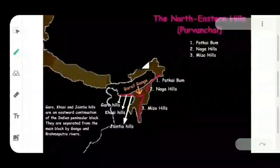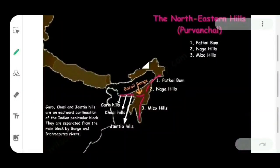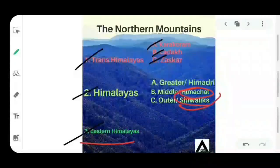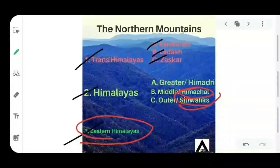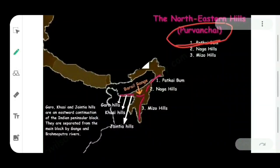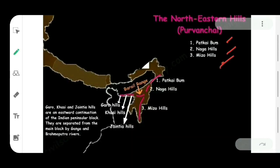Moving on to the next part: the Eastern Himalayas, also known as Purwanchal. The Eastern Himalayas are divided into three parts. The first part is Patkai Bum, the second part is Naga Hills, and the third part is Mizo Hills.